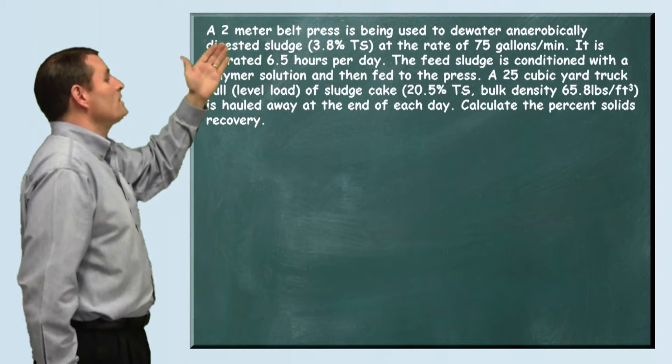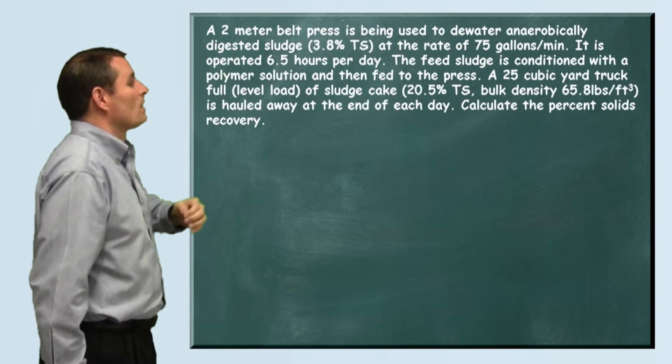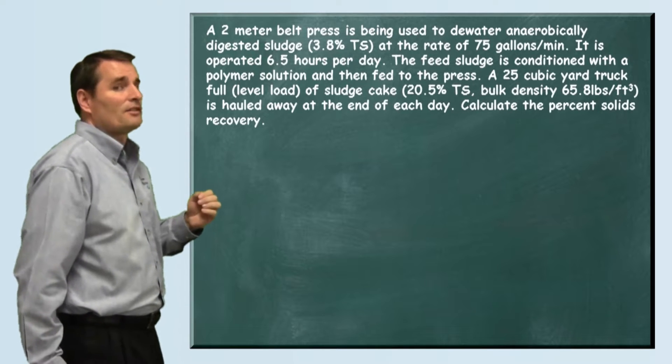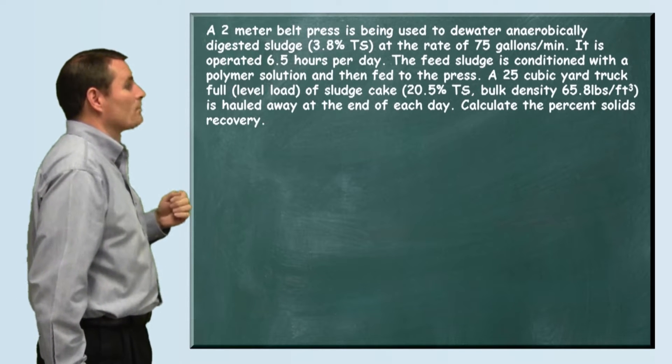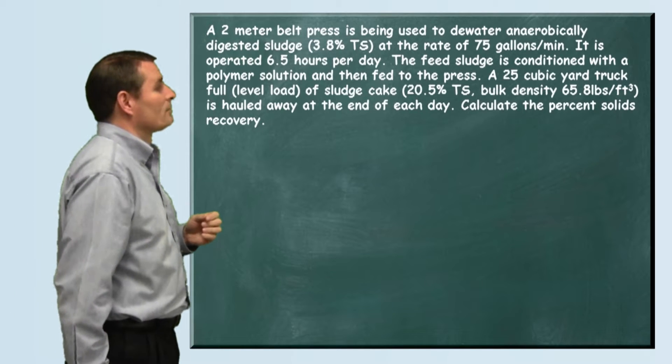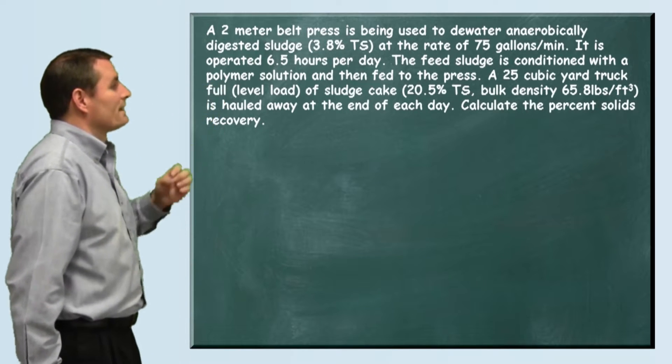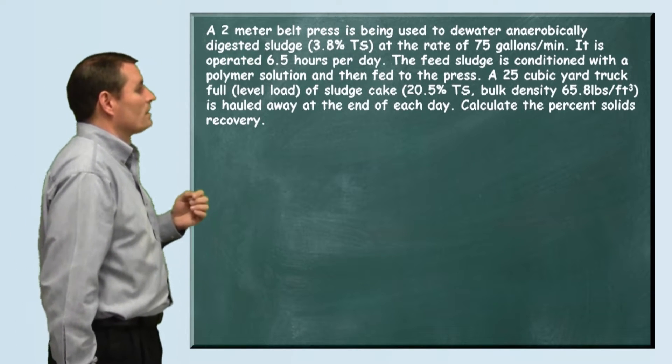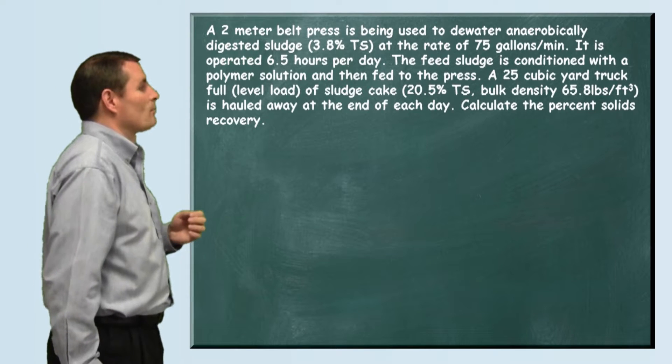The problem reads: A two meter belt press is being used to dewater anaerobically digested sludge. The total solids is 3.8 percent and it's pumping at a rate of 75 gallons per minute. It is operated 6.5 hours per day. The feed sludge is conditioned with a polymer solution and then fed to the press.